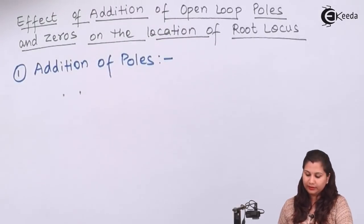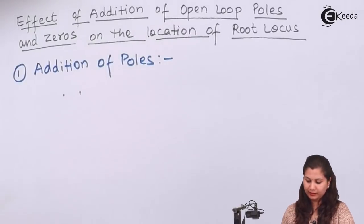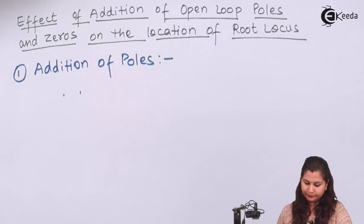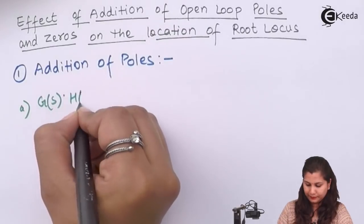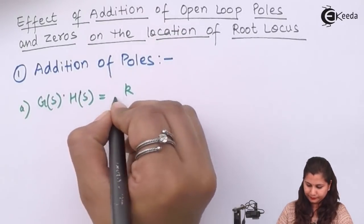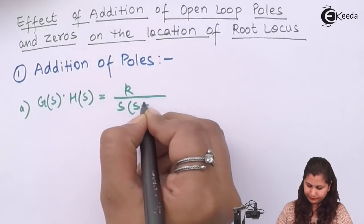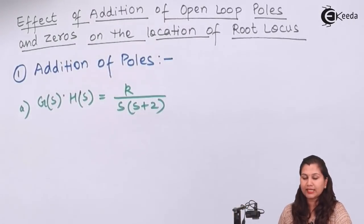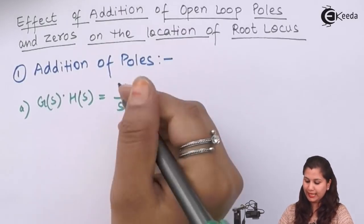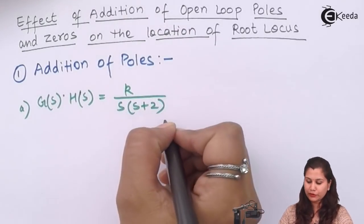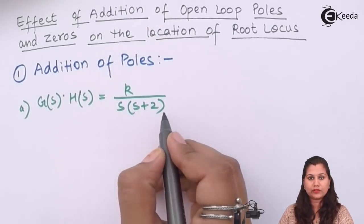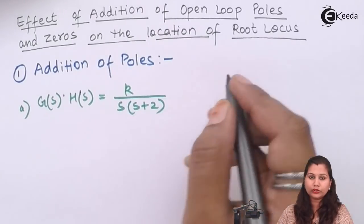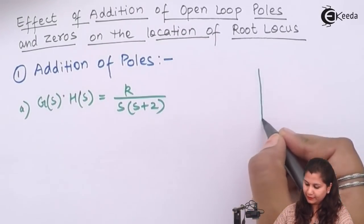To see the effect, first we will take an example so that we can easily understand it. For this we have taken an open loop transfer function given as k upon s(s+2). So its poles are s equals to 0 and s equals to minus 2. So let's draw the root locus for this and see its direction.